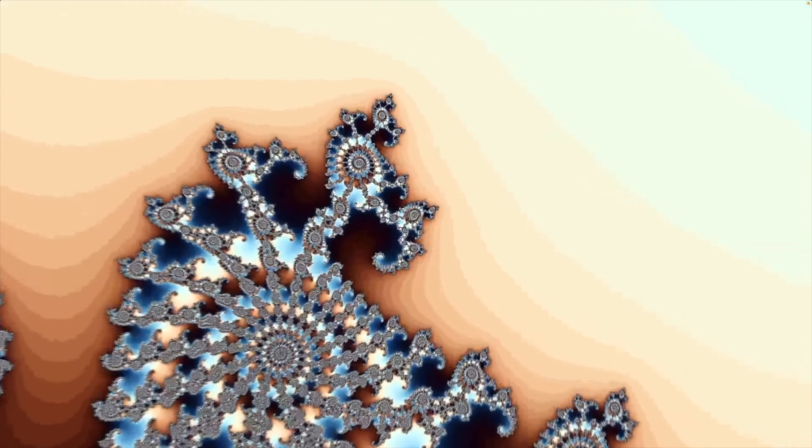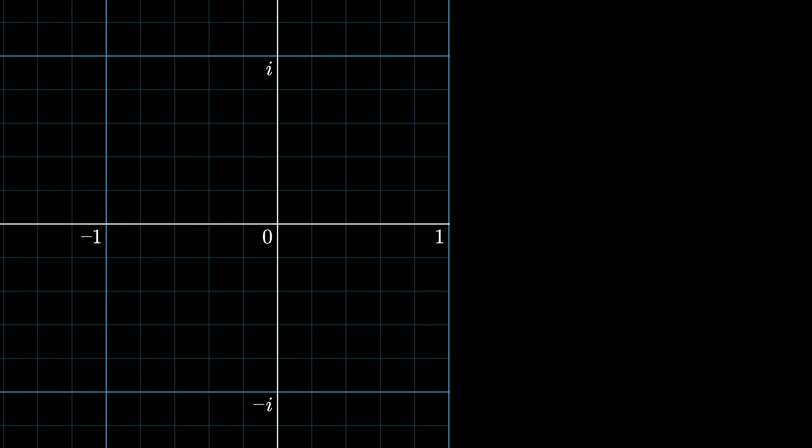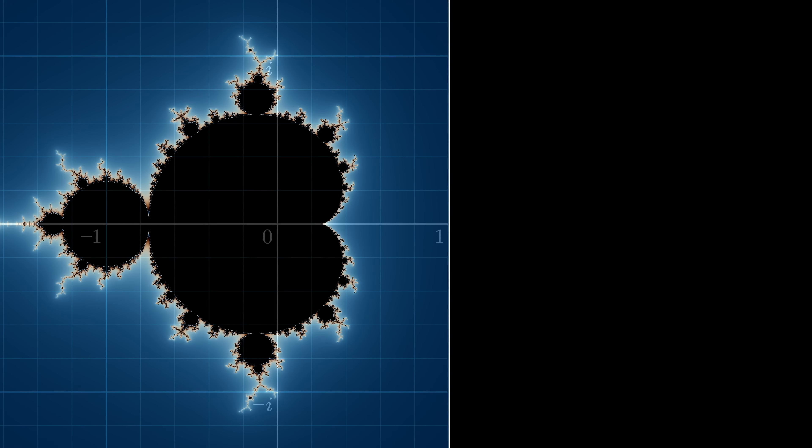We start in the complex plane. And actually, let's zoom in a bit, the real magic happens in this area. We then consider a complex number c and define a function f(z) equals z squared plus c.